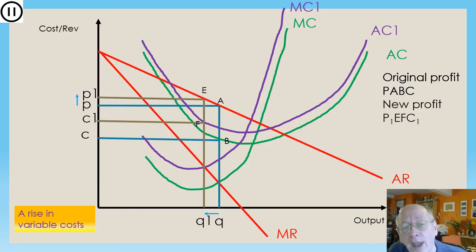Again, we get the price from the demand curve. So our new price P1, our price goes up because our costs have gone up. What do you expect to happen? And the profit is the difference between the average revenue and the new average costs. So we finish up with a profit of P1 EFC1. And you can see there that total profits have fallen.